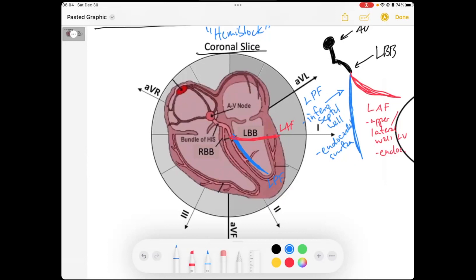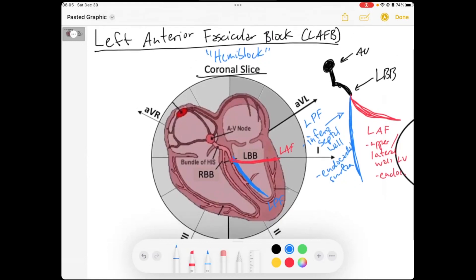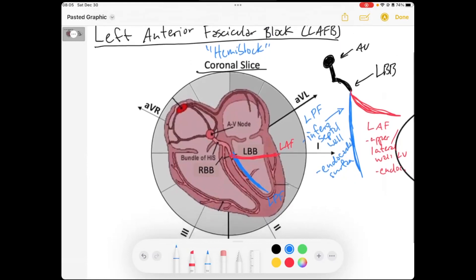And so these fascicular blocks occur when one of these fascicles gets blocked. And they have a distinct pattern. And the first one we're going to talk about, as this title suggests, is the left anterior fascicular block. And so, as the name suggests, the anterior fascicle is blocked. And so that's the X for the block.